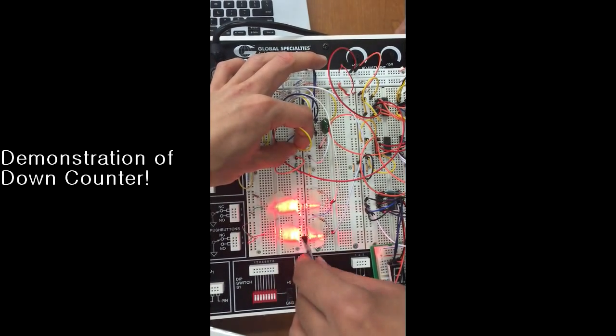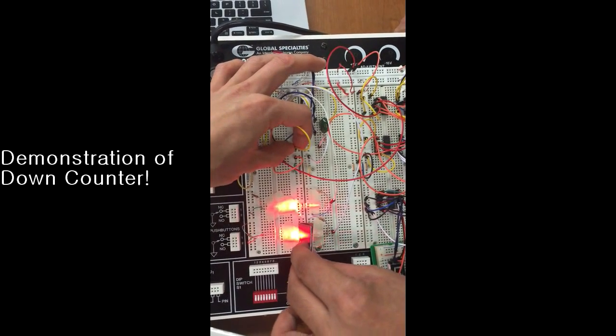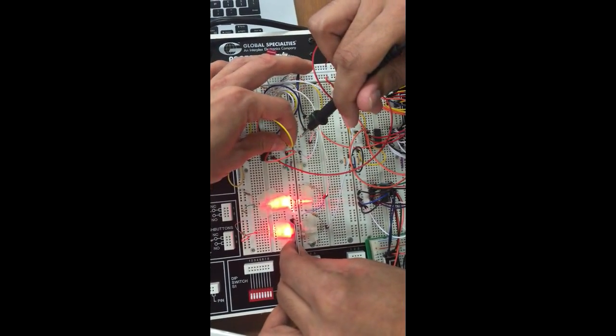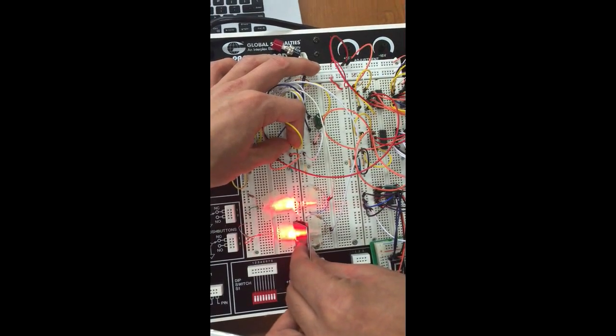Now we're going to demonstrate the down count for the circuit. I'm going to block an LED which signifies down count. When I block it he's going to clock it once. After clocking we will see that the count on this side should decrease by 1.